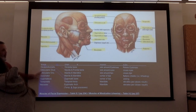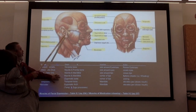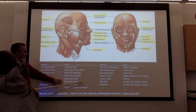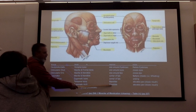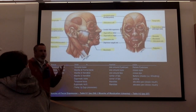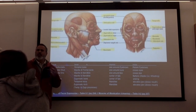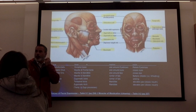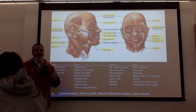Temporalis and masseter — temporalis is associated with the temporal bone, so it originates from the temporal bone and inserts into the mandible. The masseter also inserts into the mandible and does the same thing — closing the jaw. For pound for pound, I think the tongue might actually be the strongest, but the jaw is very strong. In some animals like an alligator or a shark, it's massively strong.